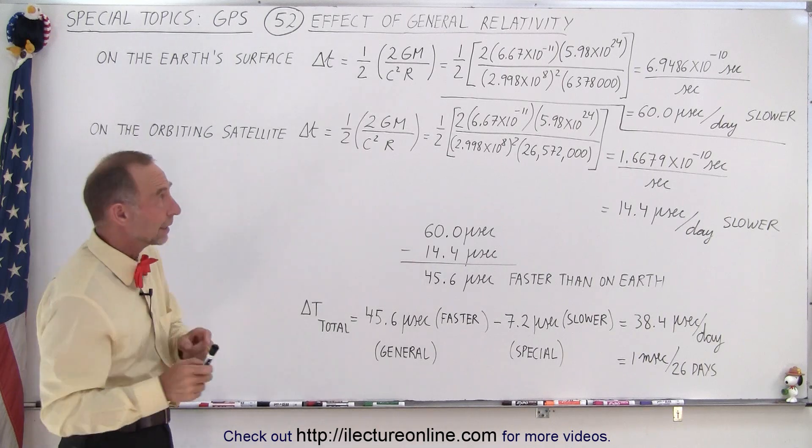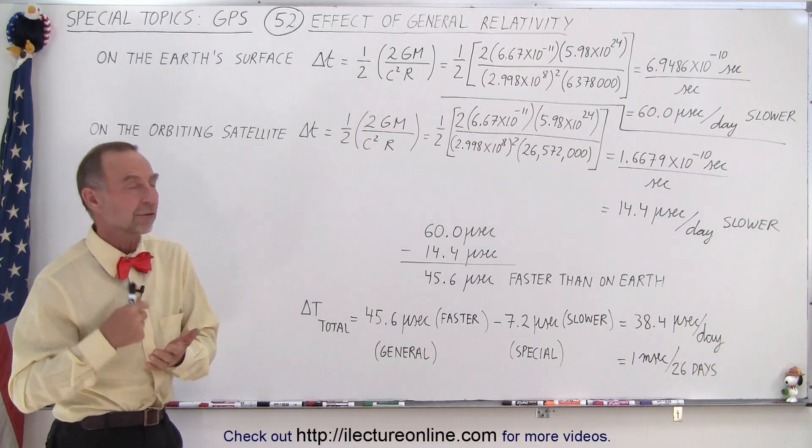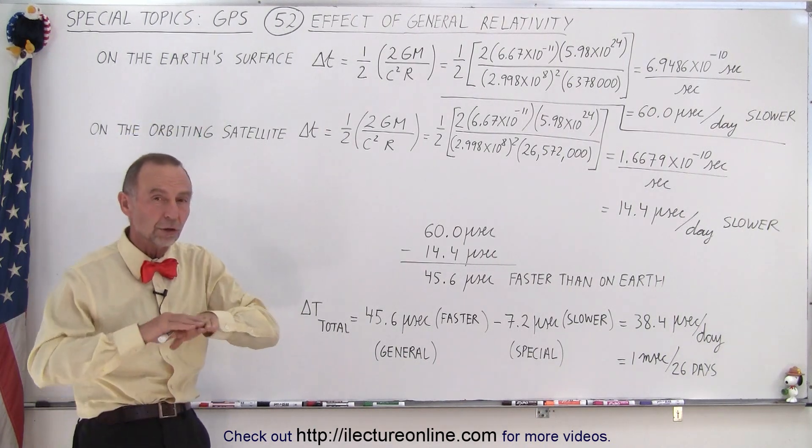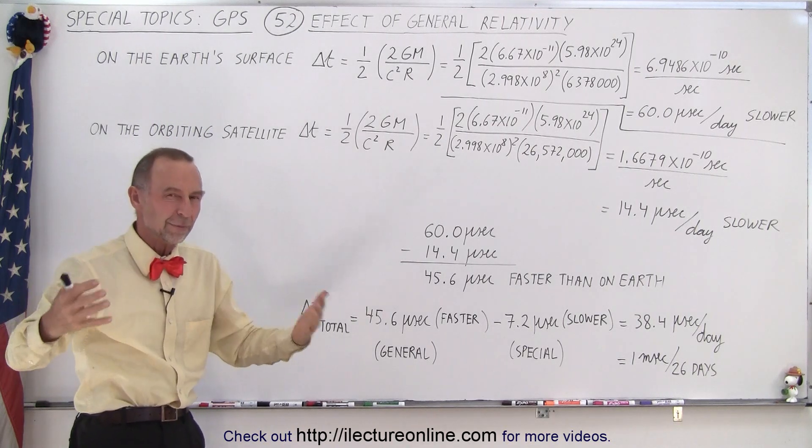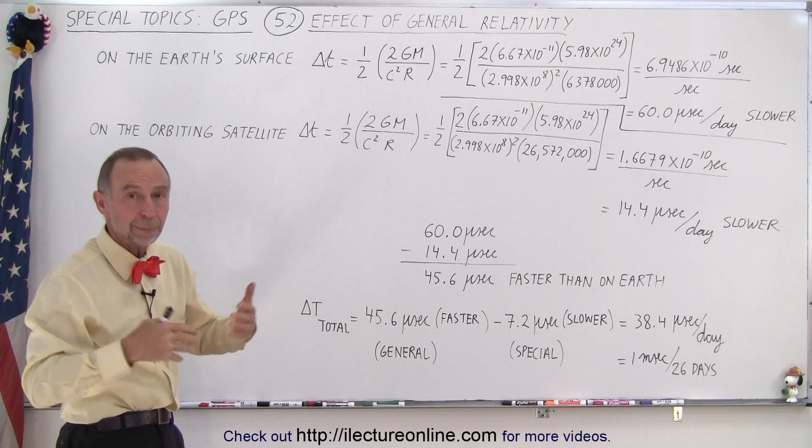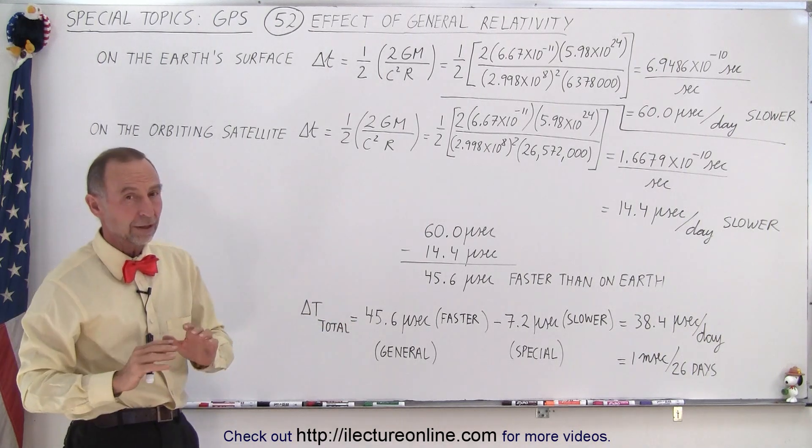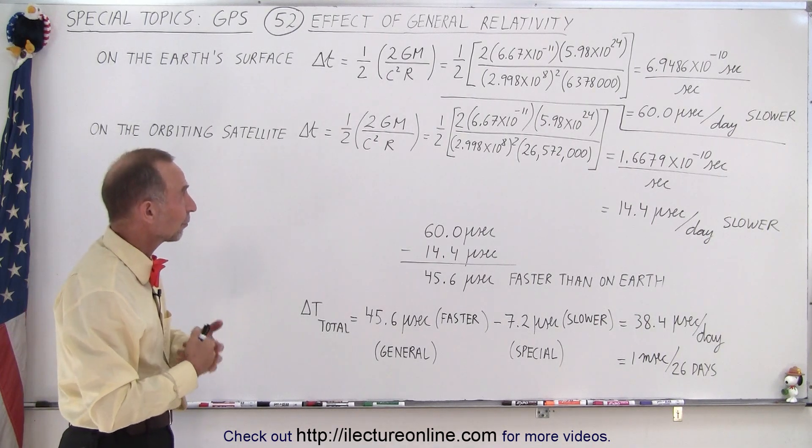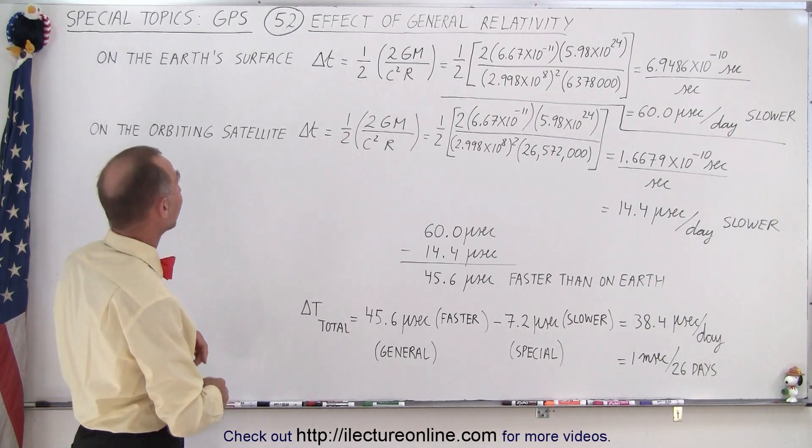So here we're going to calculate the time difference, the time dilation, due to the effects of gravity. And so we first need to figure out how much slower the clocks run on the surface of the Earth relative to some point far away in space, away from any planets or moons or stars. So we go far away into space, then we don't have the general effect of relativity.